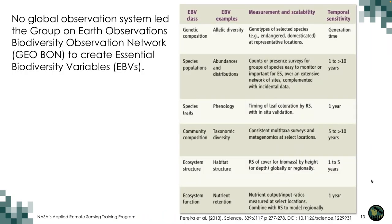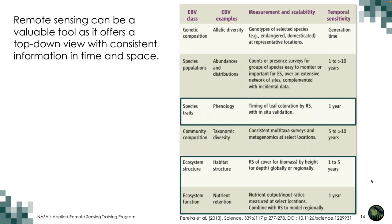The problem was the lack of a global observation system, so the Group on Earth Observations Biodiversity Observation Network, GEO BON, created the Essential Biodiversity Variables, or EBVs. Some of these can be observed through remote sensing, which is particularly valuable because it offers a top-down view with consistent information in time and space.